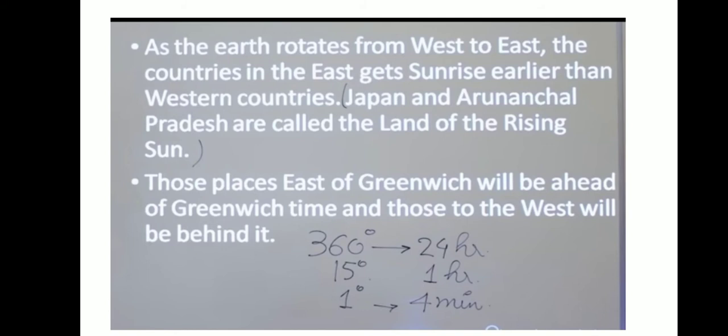The earth takes 24 hours to complete a rotation, that means it takes 24 hours to turn 360 degrees. It takes 4 minutes for the earth to turn 1 degree and 60 minutes or an hour to turn 15 degrees. Thus there is a difference of 4 minutes between every succeeding meridian and a difference of 1 hour between every 15 degrees of longitude.